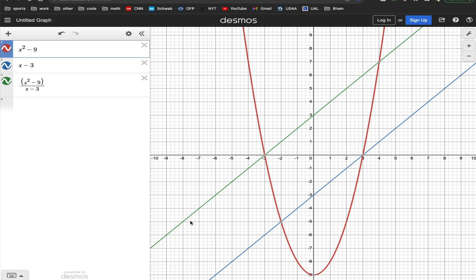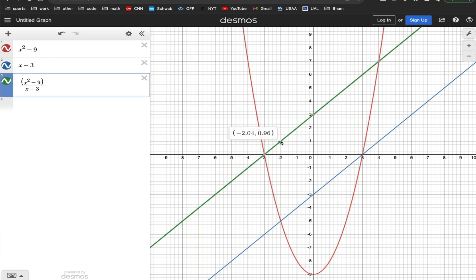Here's x squared minus 9 divided by x minus 3, if you're wondering what that graph looks like. This is actually a little bit misleading. It's this graph in green, but there's an open circle at x equals 3.